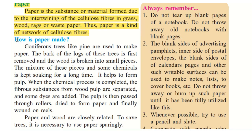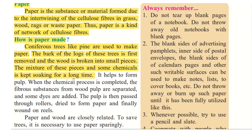Let us read the process of how paper is made. Coniferous trees like pine are used to make paper. When they are cut into logs, the outer layer of the tree — called the bark — is first removed, and wood is broken into smaller pieces. The mixture of these pieces and some chemicals is kept soaking for a long time so that the pieces can absorb the chemicals. It helps to form a pulp.